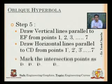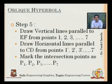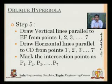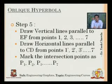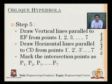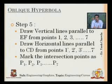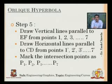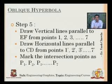Next, I'll draw vertical parallel lines to EF from points 1, 2, 3, 4, 5, 6, and 7. The key difference here is that those lines were perpendicular to CD in the rectangular case, but here they will not be — we just keep in mind that they must be parallel to EF. The horizontal lines from the dash points will be parallel to CD, same as before, and I'll mark the intersection points as P1 through P7.